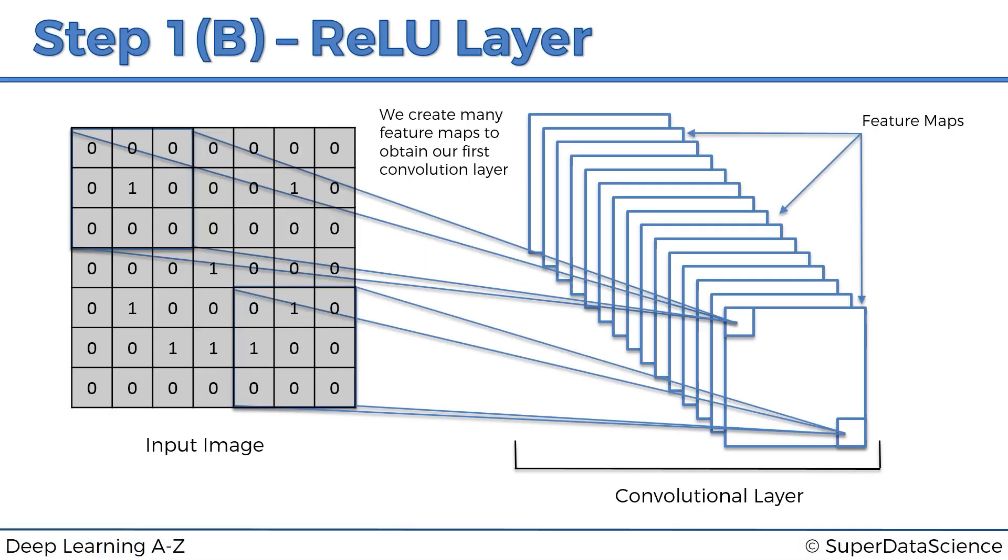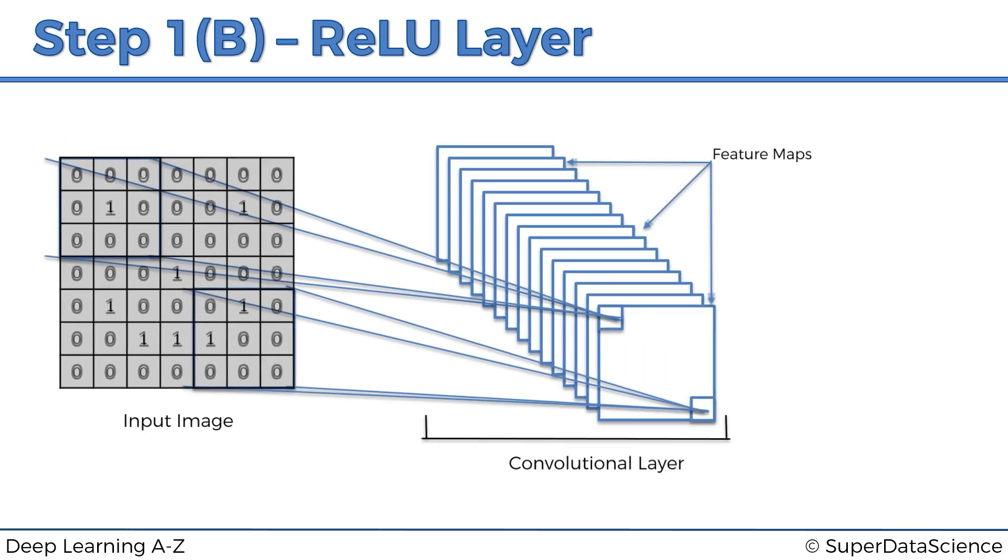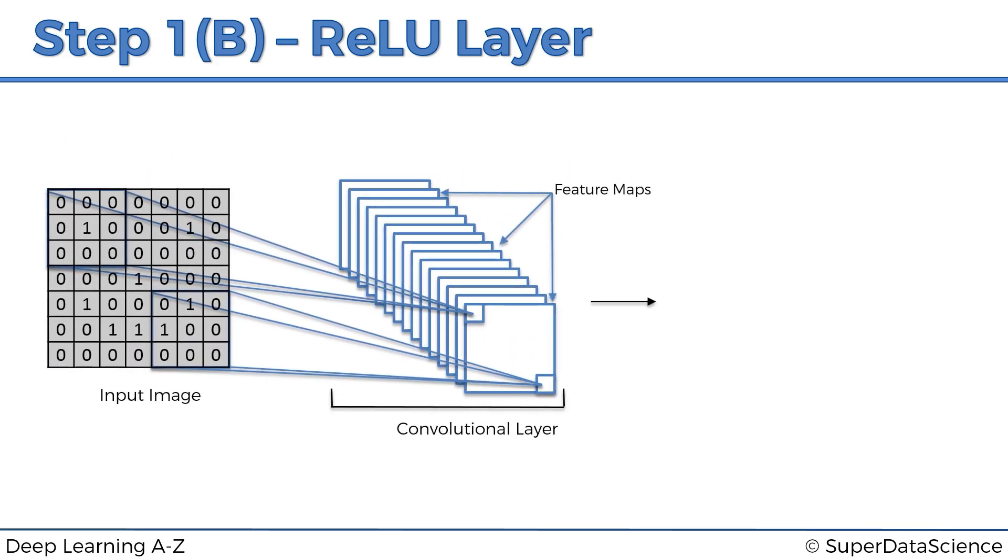And what is going on here? We have our input image, we have our convolution layer, which we've discussed, and then on top of that we're going to apply our favorite rectifier function, and you're already familiar with the rectifier function from the previous section on artificial neural networks.